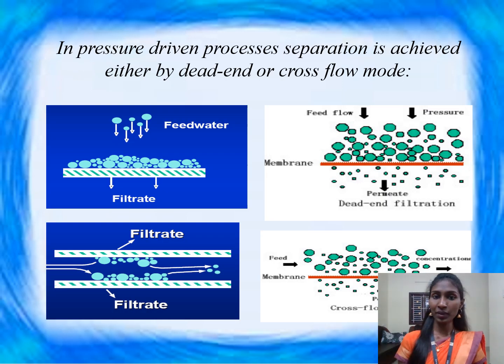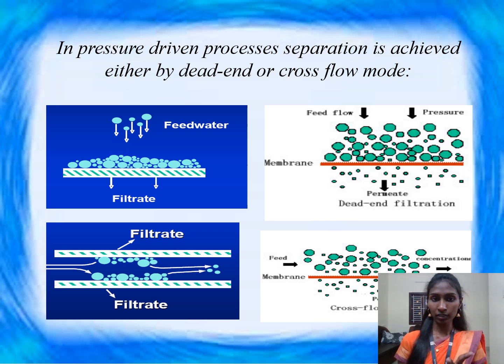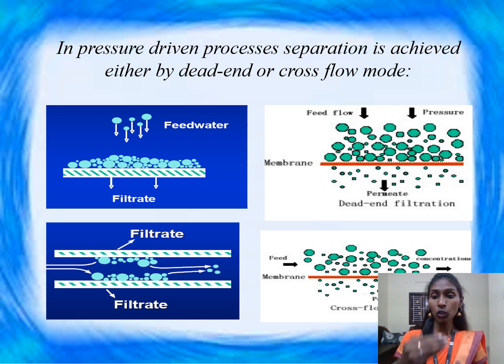In any pressure-driven process, separation is achieved by two methods: one is the dead-end flow and another is the cross-flow method, as you can see in this animated picture.